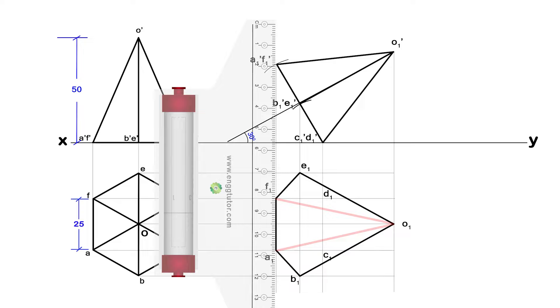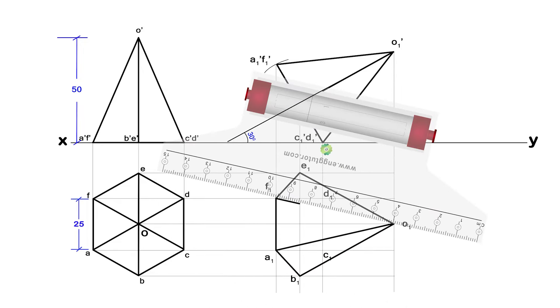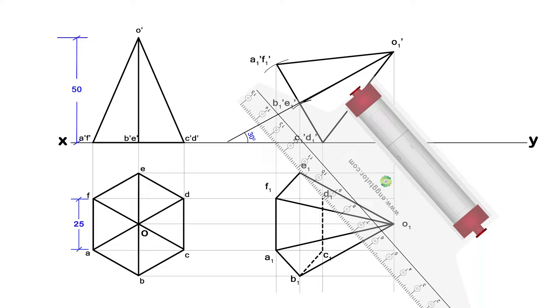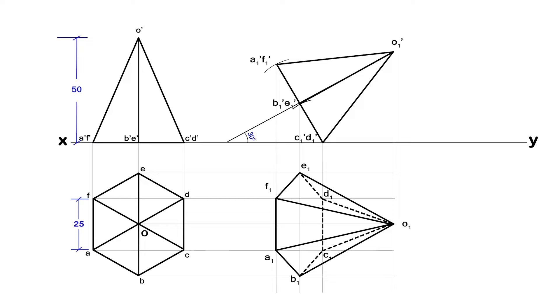These two slant edges will also be visible from the top, so join them to the apex O1. The remaining lines will not be visible from the top, so join them as hidden lines. This is the required projection of the question. Hope you enjoyed.